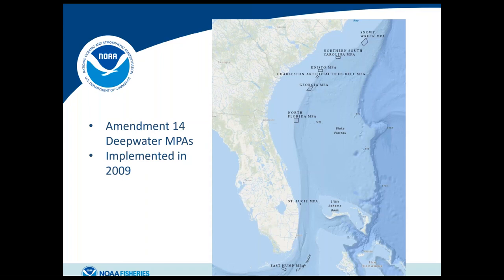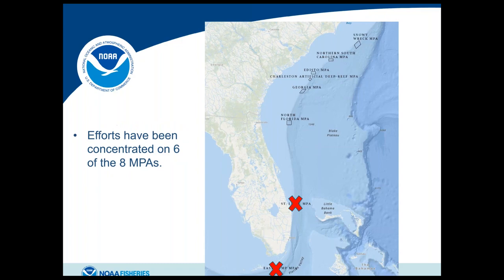The MPAs we're discussing today are the Amendment 14 MPAs — a network of eight MPAs spanning from North Carolina to the southern tip of Florida. They were implemented in 2009 as type 2 MPAs, meaning bottom fishing is prohibited in the protected areas. They were intended to protect five species of deepwater grouper and two species of tilefish. Our efforts have focused on six of these MPAs: Snowy Rack, Northern South Carolina, Edisto, Georgia, and the North Florida MPAs.